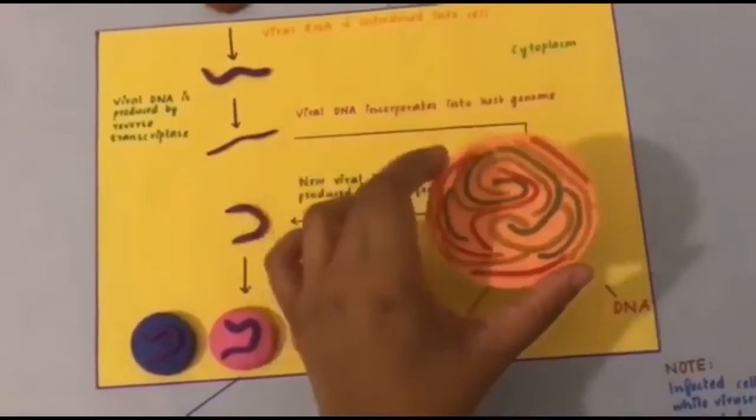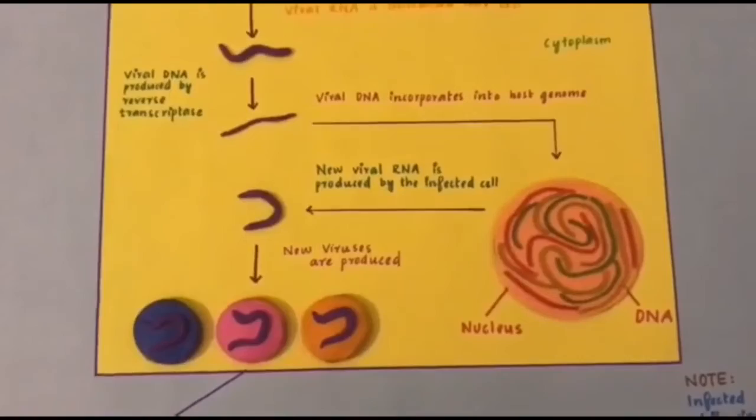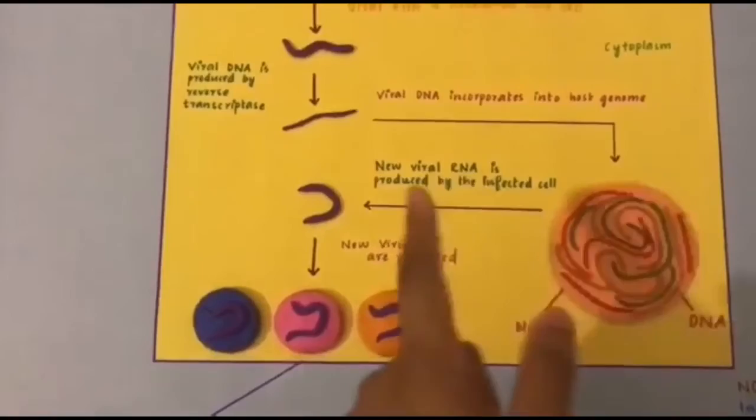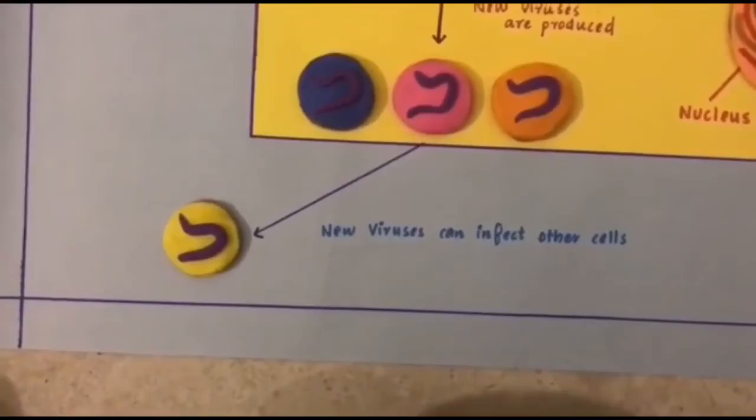Then these rubber bands that are being stuck using glue, these are the DNA. This is the DNA inside the nucleus. Once the viral DNA is incorporated into the host genome, the new viral RNA is produced by the infected cell. And with that, new viruses are produced. These three are the new viruses, and these new viruses can infect other cells. And this is how replication of the retrovirus project was made.